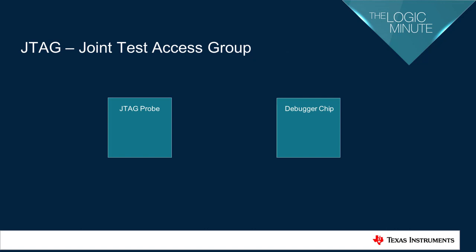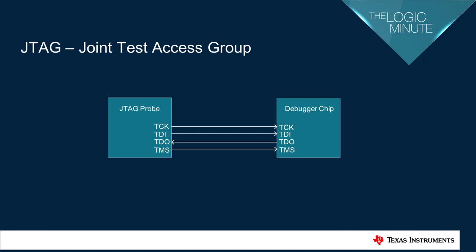JTAG typically operates with four signal lines. The TCK is the test clock or reference clock. TDI is the test data input into the DUT, or the device under test. TDO is the test data output coming out of the DUT into the JTAG probe. TMS allows the user to select the device to test.